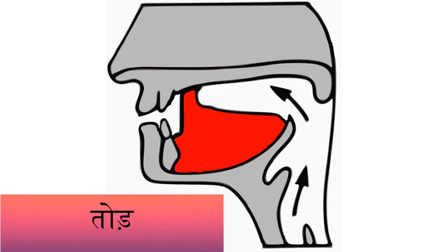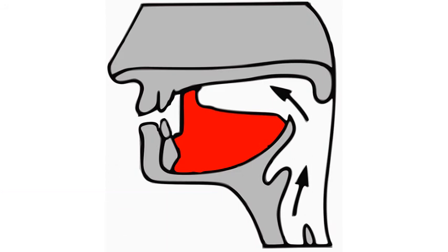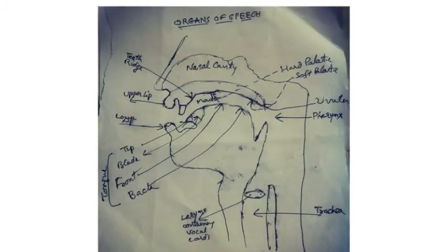Now let me show you the picture of the tongue. Dear students, this is the tip of the tongue, this is the blade, and this one is the front. This part of the tongue is the back. So it has four parts: tip, blade, front, and back. And these edges are called the rims.